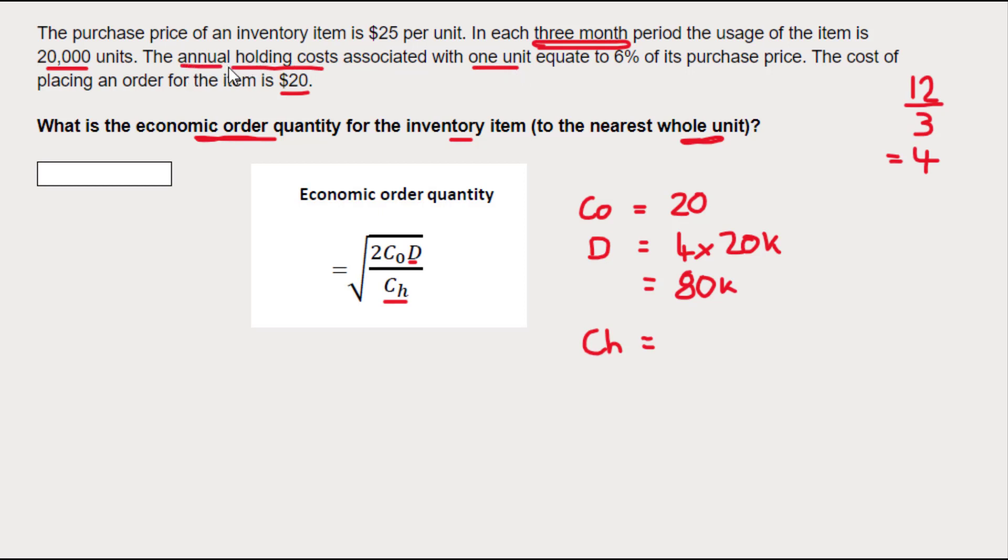Oh, the annual holding cost for one unit - that's good, it's already given to me annual, so that's the format I want it - is 6% of its purchase price. So I'm going to have to work out 6% of this $25. 25 times 0.06, because 0.06 is 6%, isn't it? So what does that come out as? My cost of holding one unit for one year is $1.50.